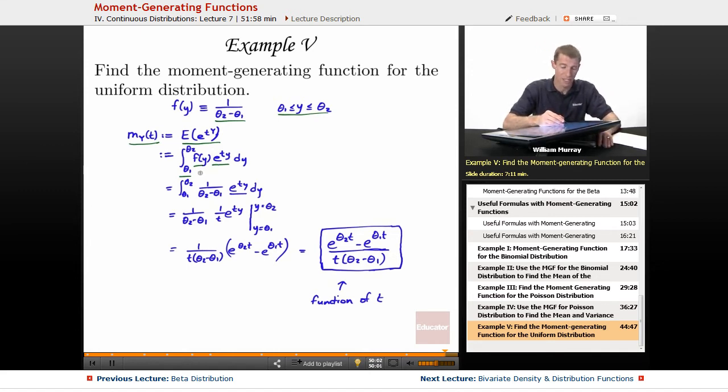Integral is like adding things up. The probability function is kind of the analog of the density function. So, instead of the summation of p of y, we have the integral of f of y, and then we still have e to the ty. f of y from above is just 1 over theta 2 minus theta 1. That comes from up above. And we'll pull that out since it's a constant. Now we have to integrate e to the ty. I did a little u substitution.